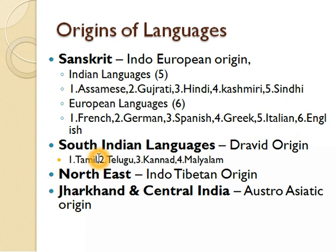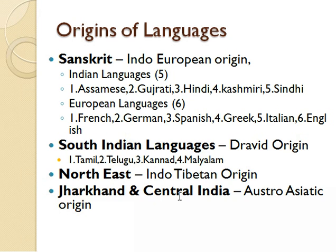South Indian languages are of Dravidian origin. There are four languages in this category: Tamil, Telugu, Kannada, and Malayalam. Some northeastern languages are of Indo-Tibetan origin, and some languages from Jharkhand and Central India are of Austro-Asiatic origin.